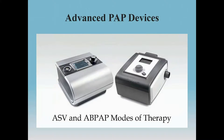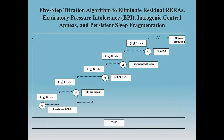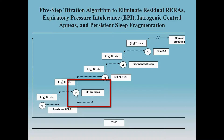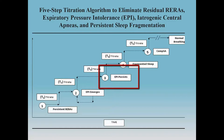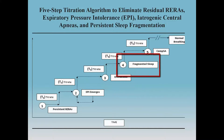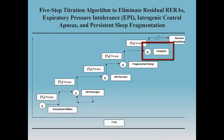Our experience has been that the use of advanced PAP devices, such as ASV and auto-bi-level, are very good at resolving these issues. In this particular algorithm, you see a progression specific to the use of the ASV device, where there would be persistent RERAs. When treated with a traditional PAP mode, expiratory pressure intolerance emerges, which may persist and aggravate sleep fragmentation. Eventually, central apneas and complex sleep apnea may develop, and then you must institute a different form of PAP therapy, such as ABPAP or ASV, to overcome that.